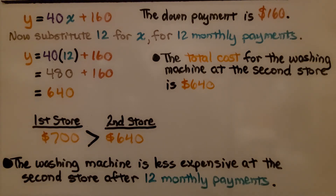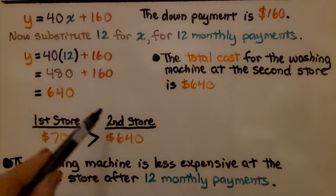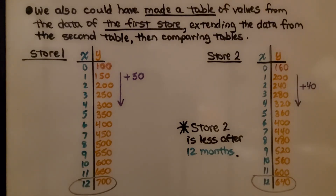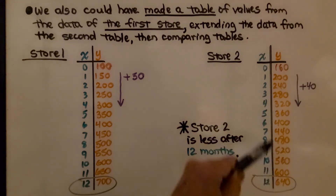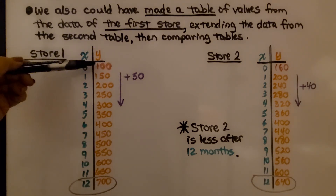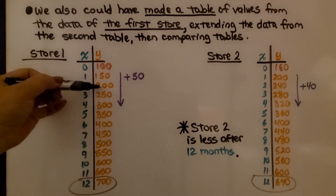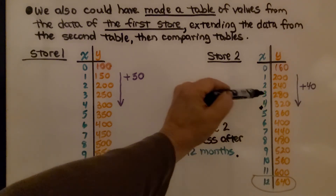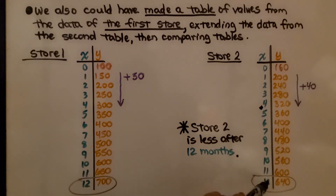The total cost at store two is $640. Store one was $700 and store two is $640, so store two is less expensive after 12 monthly payments. As a bonus, we also could have made a table of values from store one's data and extended the table from store two, then compared them directly. For store one, starting at $100 and adding $50 each month reaches $700 at month 12. For store two, continuing to add $40 from the given table reaches $640 at month 12, confirming store two is cheaper.